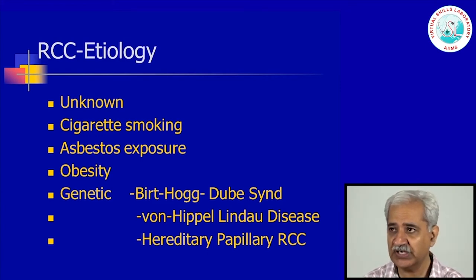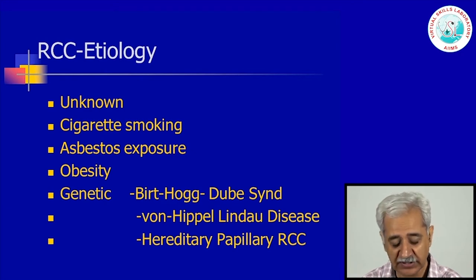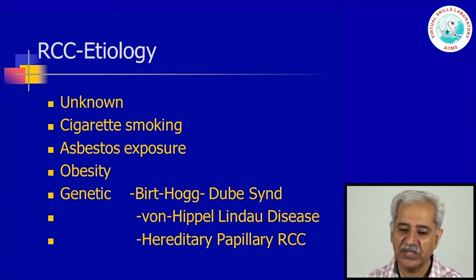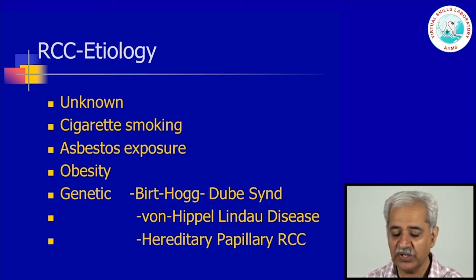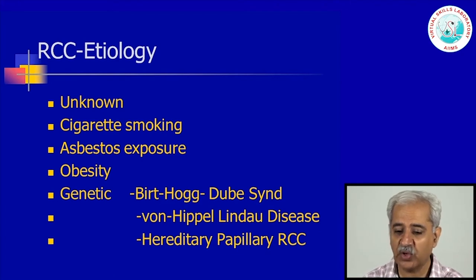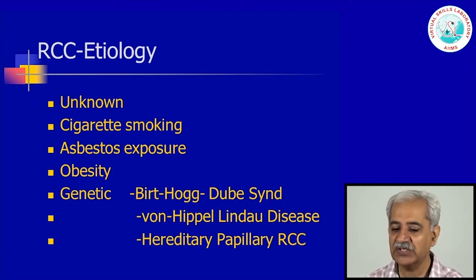The etiology is mainly unknown, although in some epidemiologic studies, smokers have a higher incidence of renal cell carcinoma. Patients with exposure to asbestos also have a higher incidence, and obese people are more prone to develop it, but these are not very strong associations. There are a few genetic situations with high incidence of RCC. One is BHD syndrome, which is being studied. Von Hippel-Lindau disease, known for many decades, is autosomal dominant and carries almost 100 percent incidence of unilateral, bilateral, or multiple clear cell or cystic renal cell carcinomas. Hereditary papillary renal cell carcinoma families have also been described.